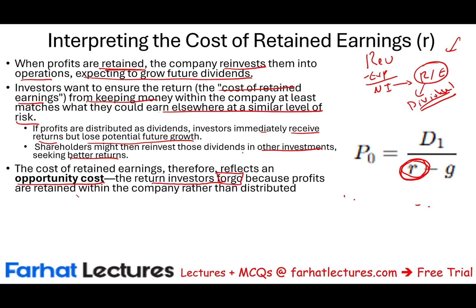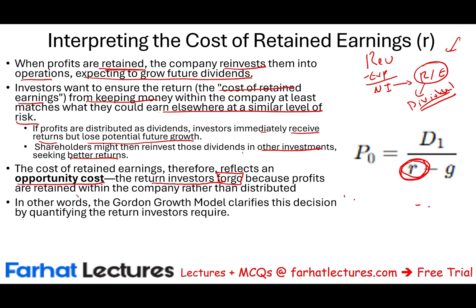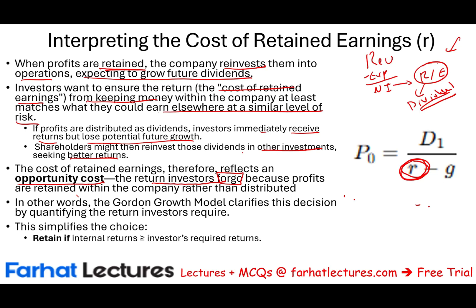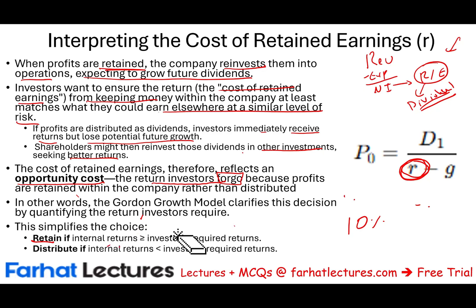The dividend growth model clarifies this decision by quantifying the return investors require. If the internal return is greater than R, you tell the company to keep the money — they can generate more return than what you require. For example, if you require 10% and the company can generate 15% internally, keep it. But if the internal rate of return is less than the required rate — say you require 10% and they only have projects returning 7% — you tell them to give you the money and you'll invest elsewhere. R is the same as the required rate of return.